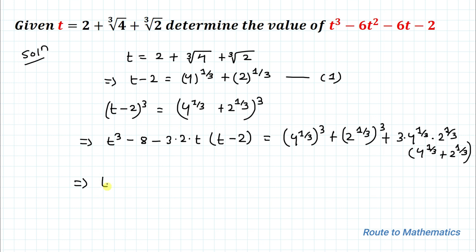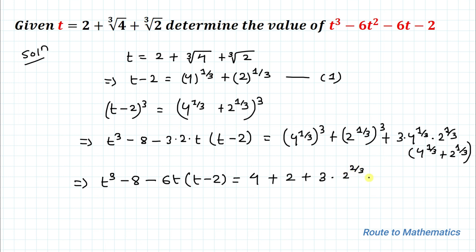In the next step we have t cubed minus 8 minus 6t times (t minus 2) equals (4 to the power 1/3) cubed, which is 4, plus (2 to the power 1/3) cubed, which is 2, plus 3 times 2 to the power 2/3 times 2 to the power 1/3 times (4 to the power 1/3 plus 2 to the power 1/3). From equation 1, the value of (4 to the power 1/3 plus 2 to the power 1/3) is t minus 2.